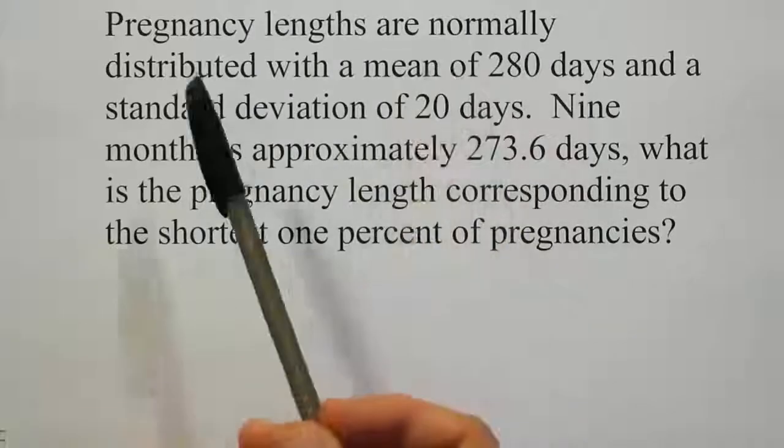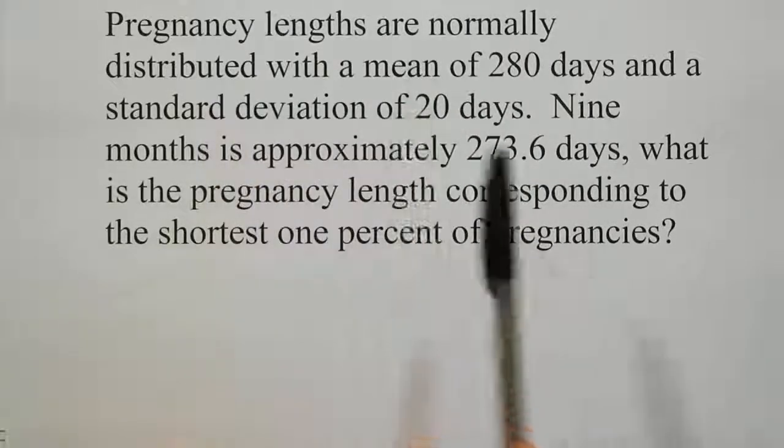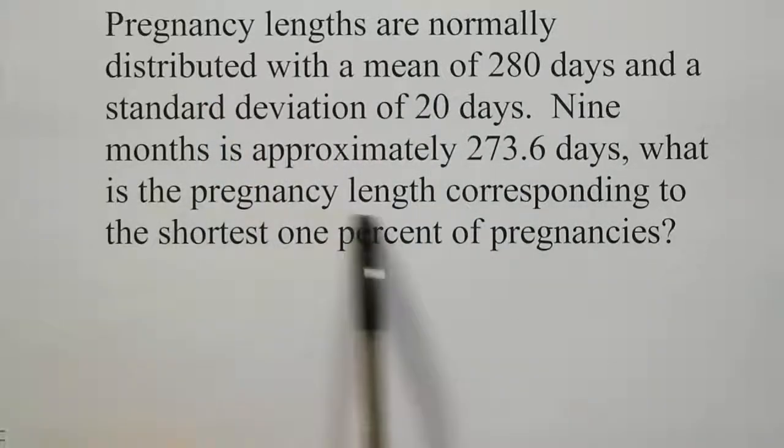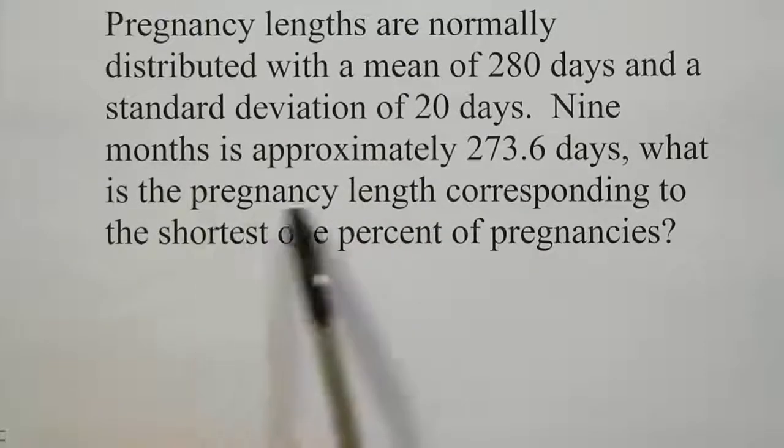Notice that it says normally distributed, so we're working with the bell curve, but then it asks us what is the pregnancy length. It doesn't say what's the probability, it says what's the pregnancy length.